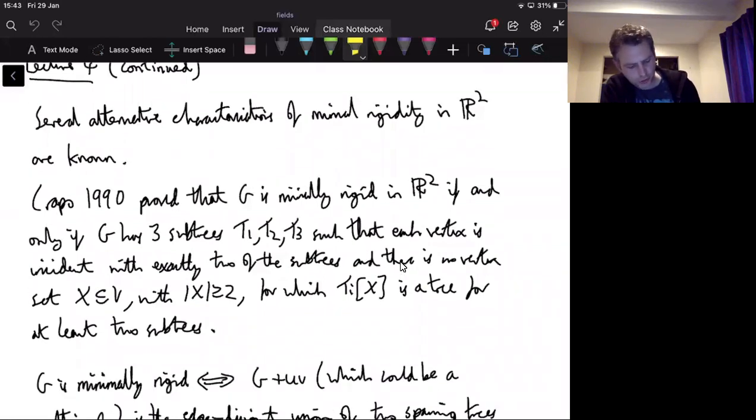So the first one I wanted to mention is due to Henry Crapo in 1990. He proved that G is minimally rigid in R² if and only if G has three subtrees T1, T2, T3, such that every vertex of G is incident with exactly two of the subtrees. So this is a so-called free T2 characterization. So there are three trees, and each vertex is incident with exactly two of the subtrees.